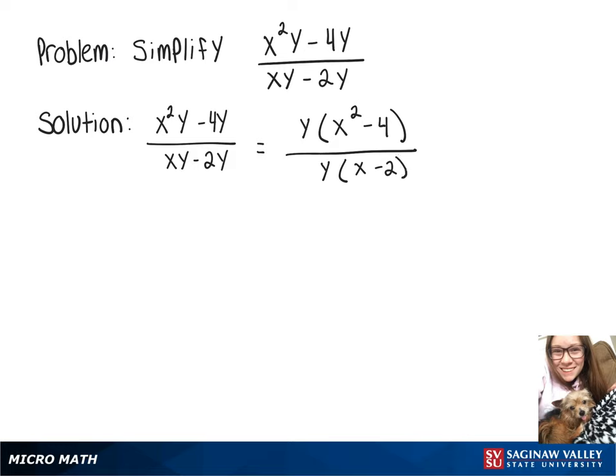Now on top, that x squared minus 4 is a difference of squares. So we can put up there y times x plus 2 times x minus 2. And on bottom, we still have y times x minus 2.